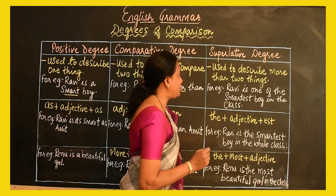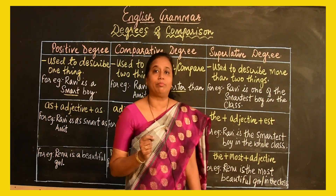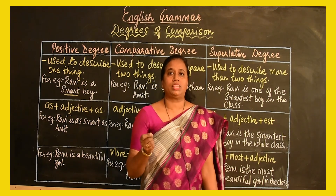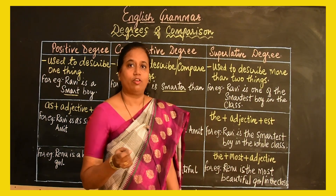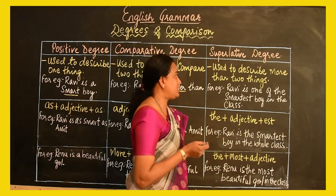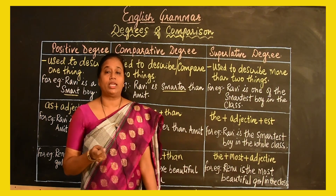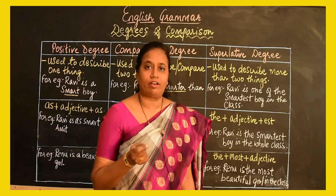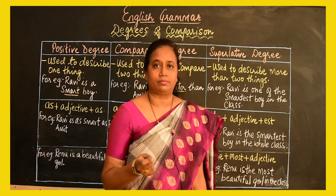In the superlative degree, it is used to describe more than one thing in the same group or in the same class. For example, 'Ravi is one of the smartest boys in the class.' So we are comparing Ravi with many other boys in the class.